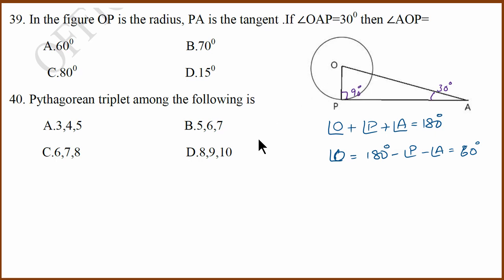40th question. Which one is a Pythagorean triplet? The Pythagorean triplet is 3, 4, 5. 3 square plus 4 square equals 5 square, that is Pythagorean triplet.